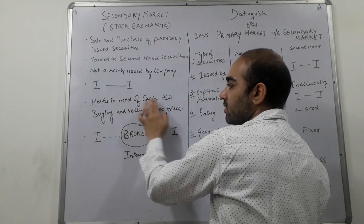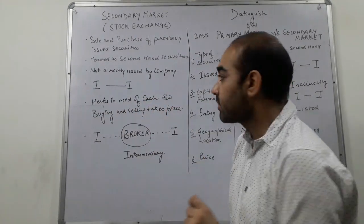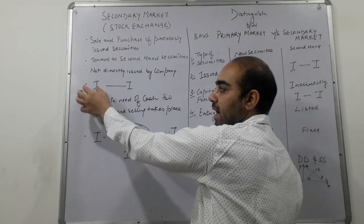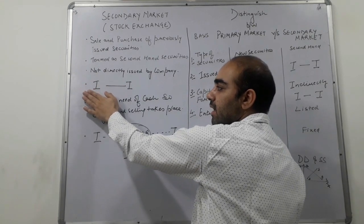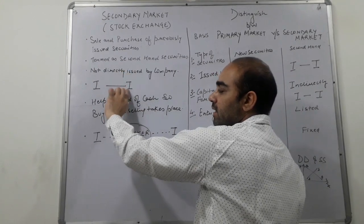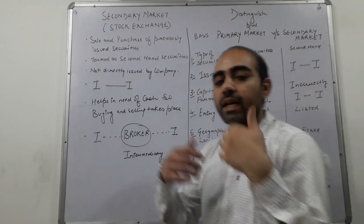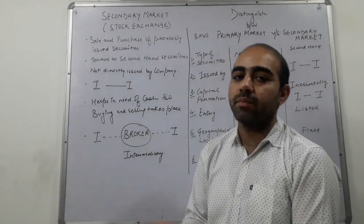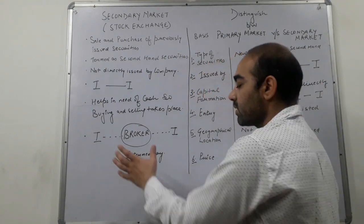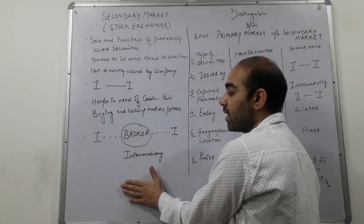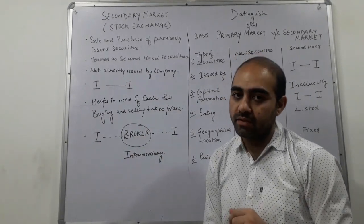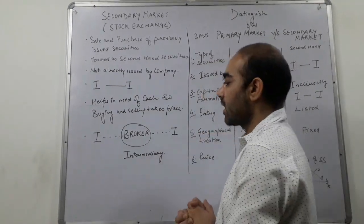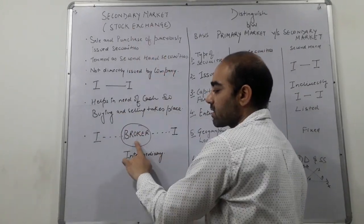The secondary market also helps in need of cash, as buying and selling takes place here. For example, one investor has cash and wants to purchase something, while an existing investor needs cash but holds shares. Through the secondary market, the shares are sold and cash is transferred to that investor. This market works with the help of a broker as an intermediary. Stock exchange is the secondary market.